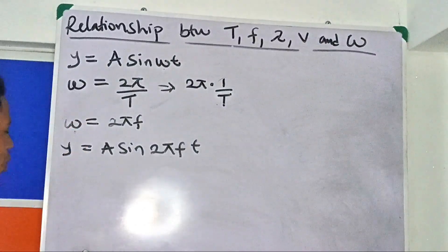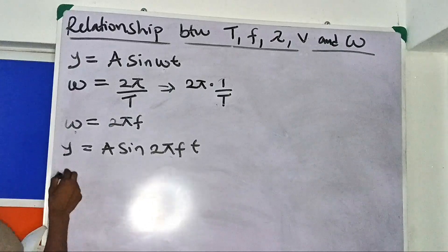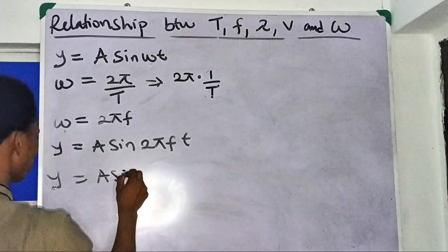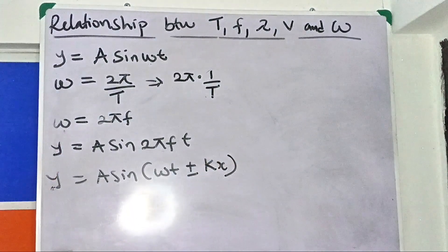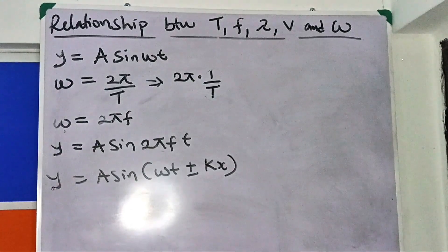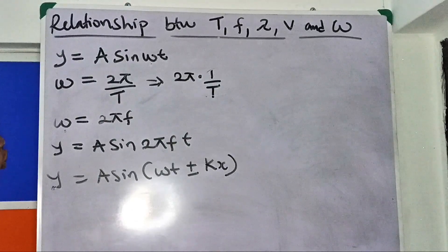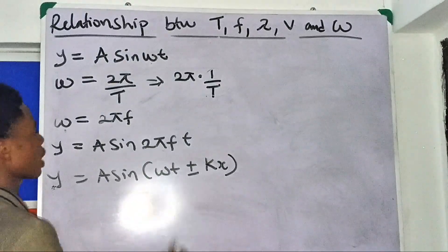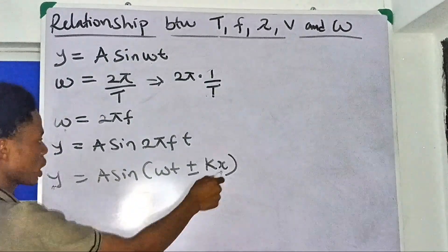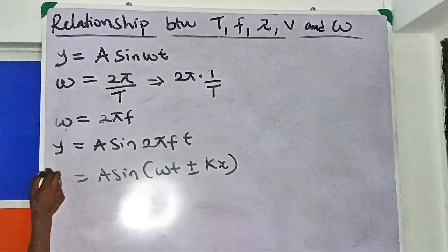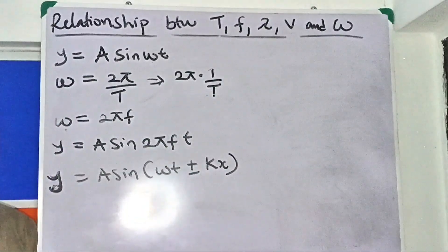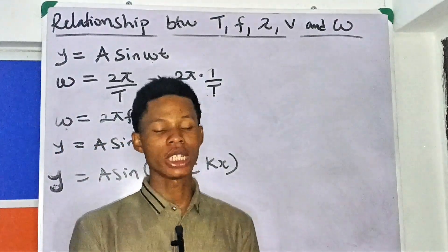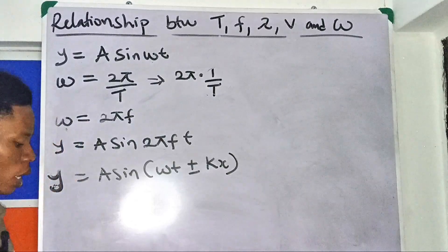We have another formula: y = A sin(ωt ± kx). This equation is used when the wave is not considered from the origin (i.e., not from x = 0). Here k is a constant and x is displacement on the x-axis, while y is displacement on the y-axis. It is plus or minus depending on the direction of the wave — positive or negative direction.